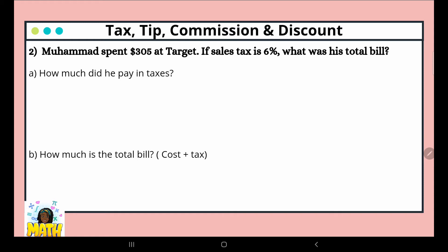Mohammed spent $305 at Target. If sales tax is 6%, what was his total bill? How much did he pay in taxes? So we're going to do our percent proportion: part over whole equals percent over 100. We don't know the part, that's what we're going to find. The whole is 305, and the percent is 6 over 100.